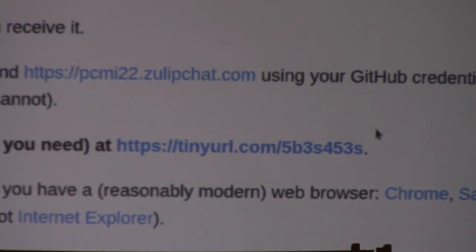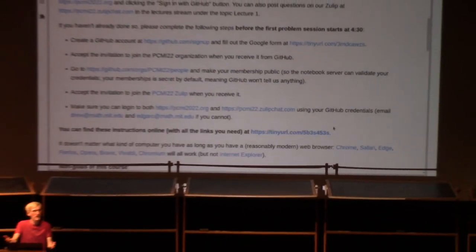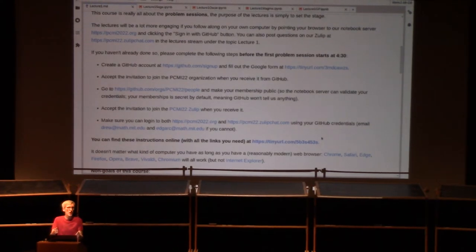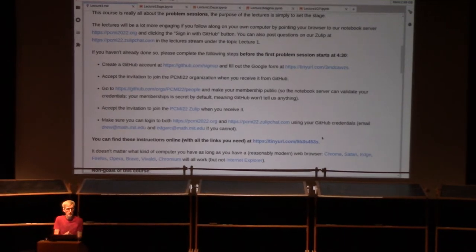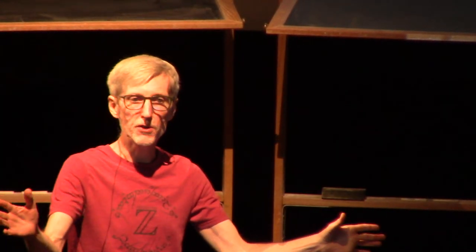You can find all the setup instructions at tinyurl.com/5b3s453s. In order to participate in the first problem session you must have completed the setup — you won't be able to do anything otherwise. About 10 people had done some steps but not all: they created a GitHub account and accepted the invitation but hadn't made their membership public. Without that, the notebook server goes to GitHub, and GitHub says 'never heard of this person.' The good news is that once this is done, you don't need to install any software — as long as you have a modern browser, you can use all the tools.